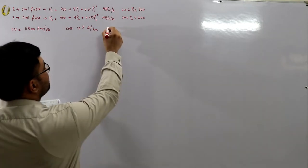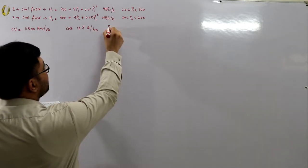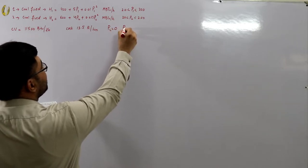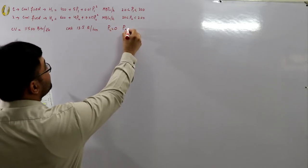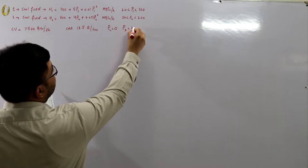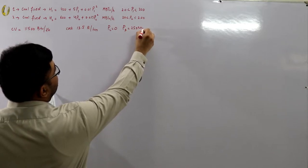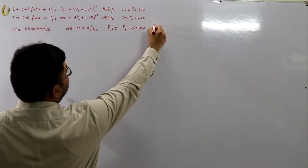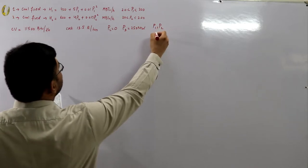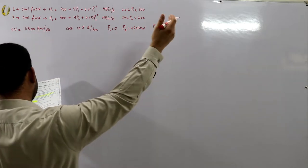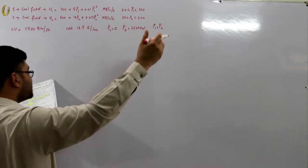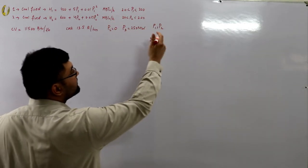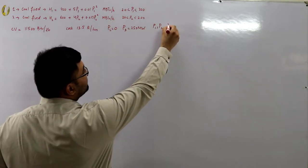Calculate the optimal operation for a load of 250 megawatts, neglecting losses. So the load demand is 250 megawatts. The unknowns are p1, p2, and lambda. We need to find the optimal operation: calculate p1, p2, and the cost of electricity lambda.